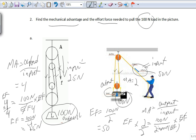So that would be 50. So you'd pull with 50 newtons to lift something that's 100 newtons. So that's a simple worksheet on pulleys and mechanical advantage.